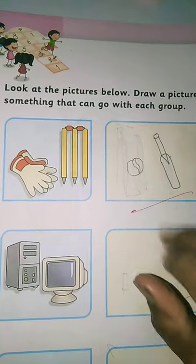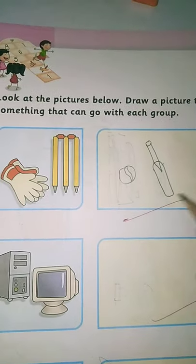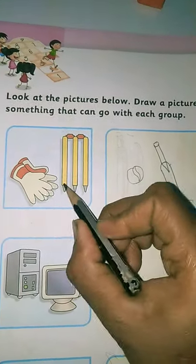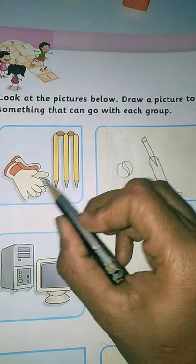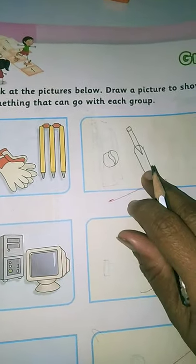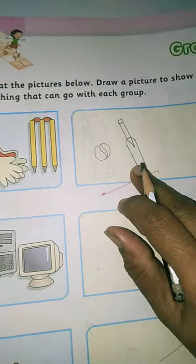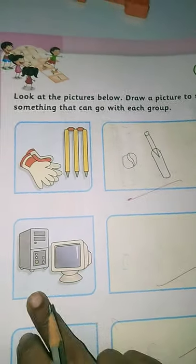Bat, ball or any other thing which is related with this group. Kyunki hume group se related drawing picture yaha pe karna hai. So, the second one now.